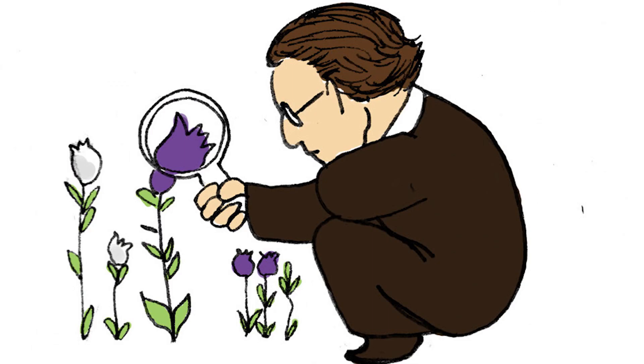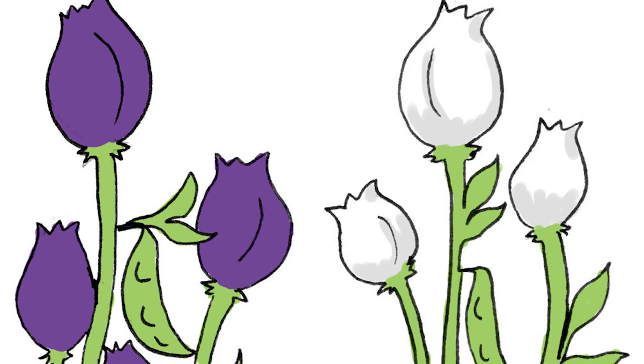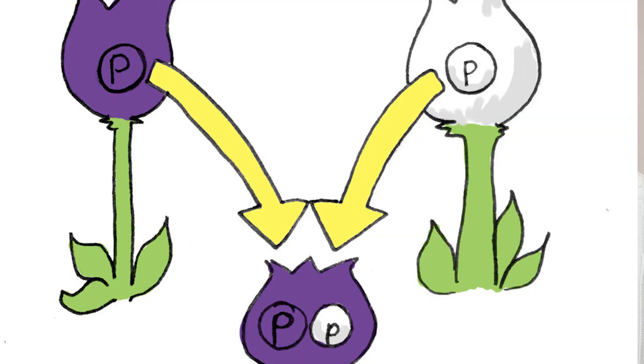Luckily, Gregor Mendel — known as the father of genetics — came along just in the nick of time to investigate inheritance by carrying out breeding experiments on pea plants. He found that characteristics were determined by factors that were inherited and did not blend together. Mendel discovered that when he crossed white flower and purple flower pea plants, the result was not a blend; rather than being a mix of the two, all the pea plants were purple flowered.